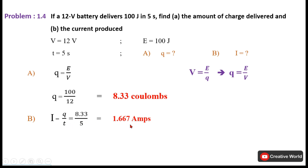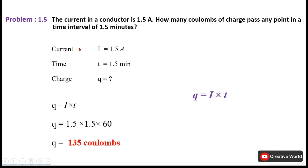Problem 1.5: The current in a conductor is 1.5 ampere. How many coulombs of charge pass any point in a time interval of 1.5 minutes? Current is given and time is given in minutes, so we first convert time to seconds. Q = I × T = 1.5 A × (1.5 × 60 s) = 135 coulombs.